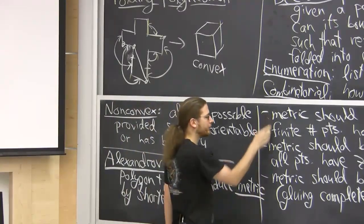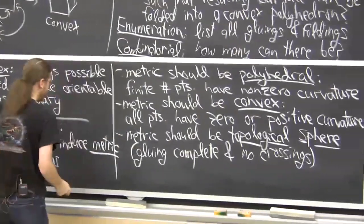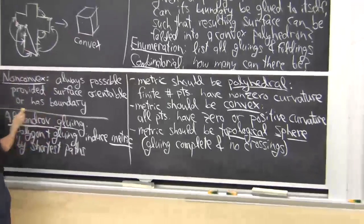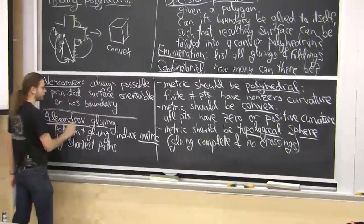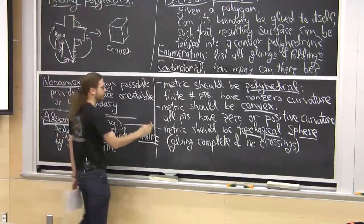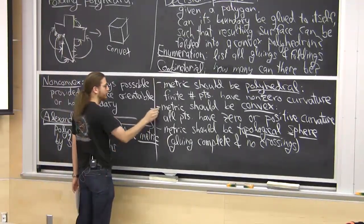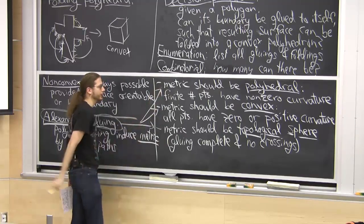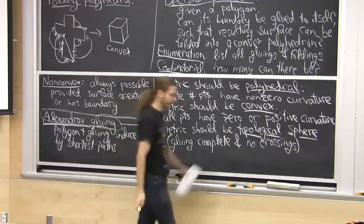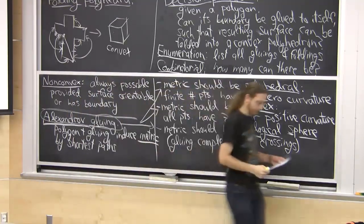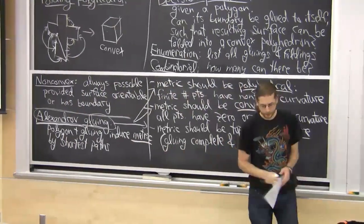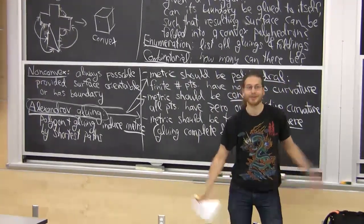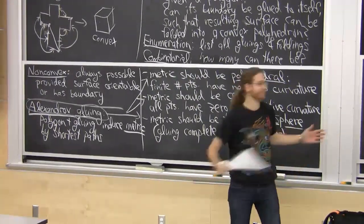So these three properties together are what I'm going to call an Alexandrov gluing. If you satisfy all three of these, you are Alexandrov. And now we have a cool theorem about Alexandrov gluings called Alexandrov's theorem.